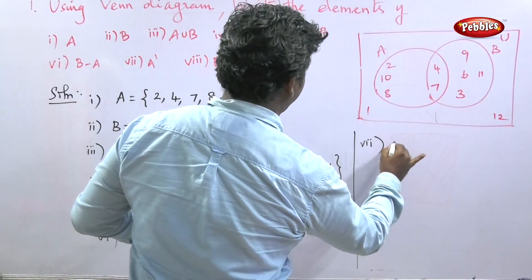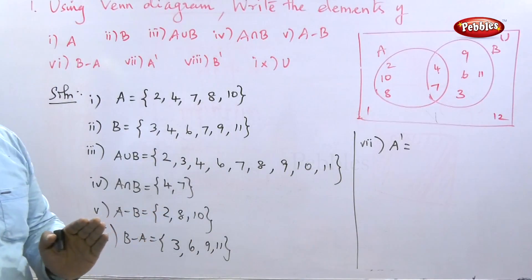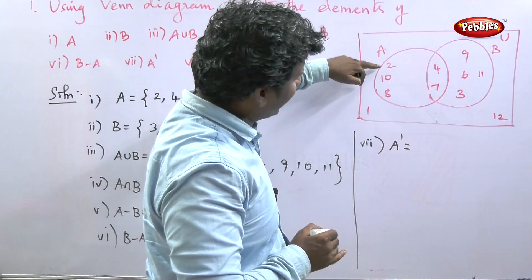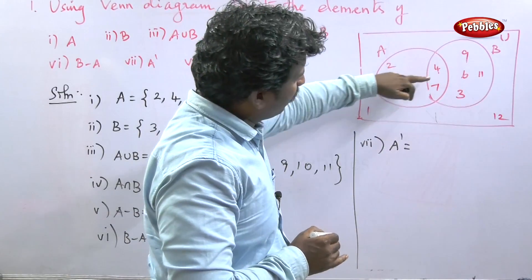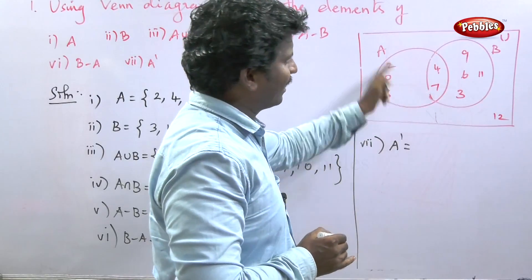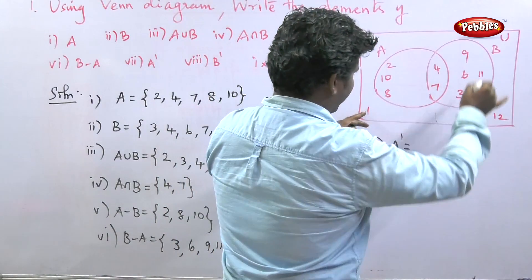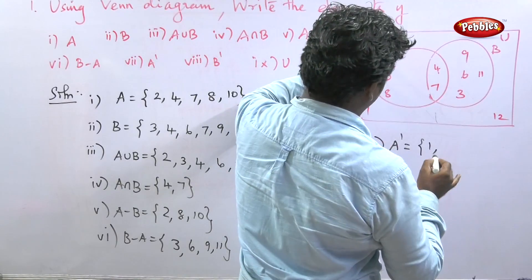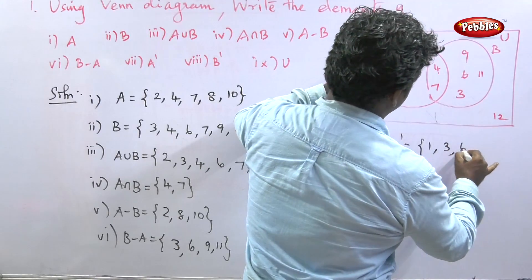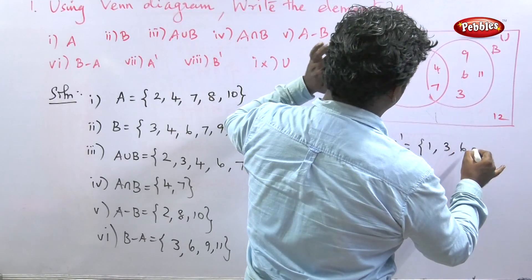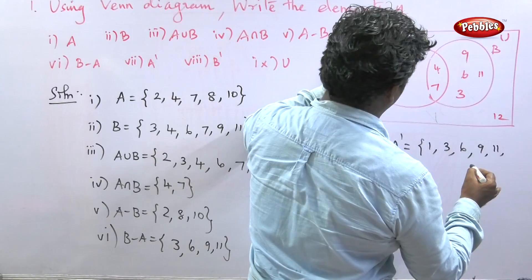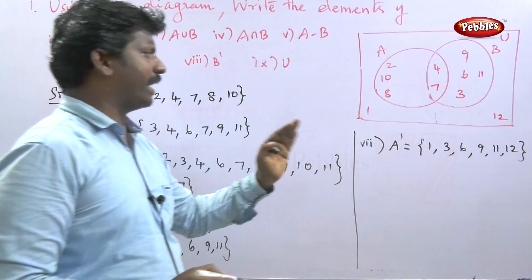The seventh one is A dash, the complementation of A. Elements not in A. A contains 2, 10, 8, 4, 7. Avoiding these, other than A in the whole set gives us 1, 3, 5, 6, 9, 11, 12. This is A dash.